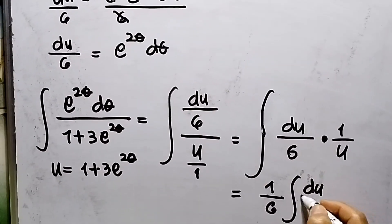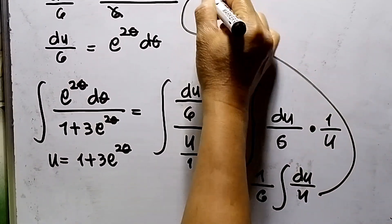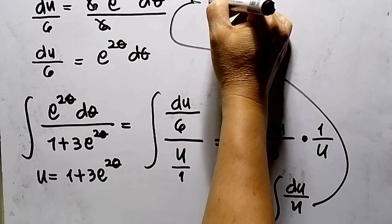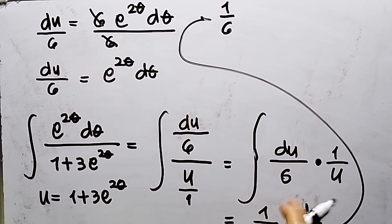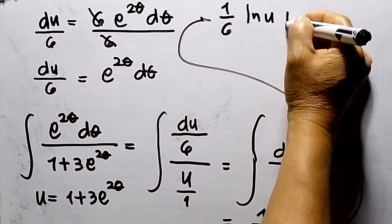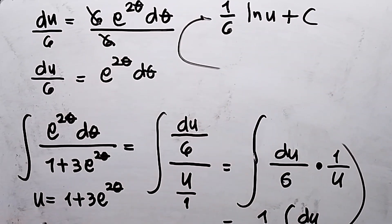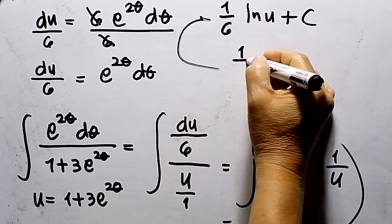So in here, this will be 1 over 6. The integral of du over u is ln u plus c.